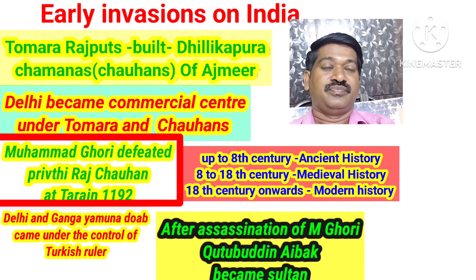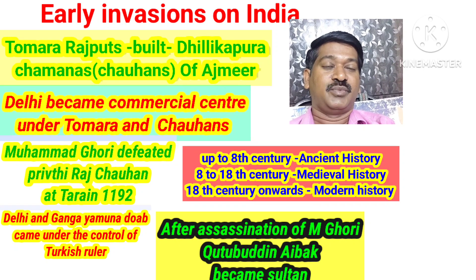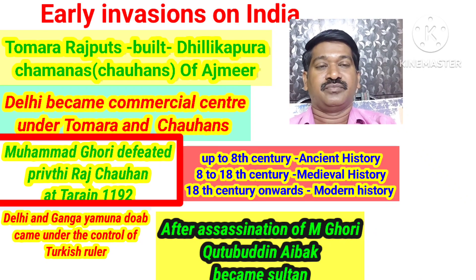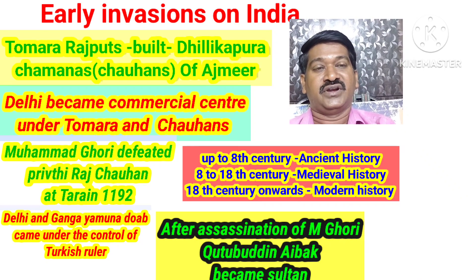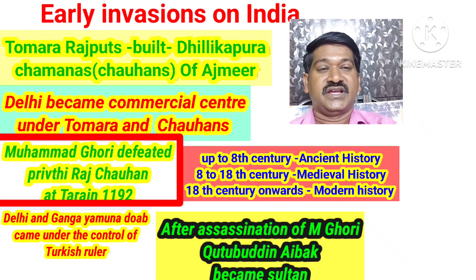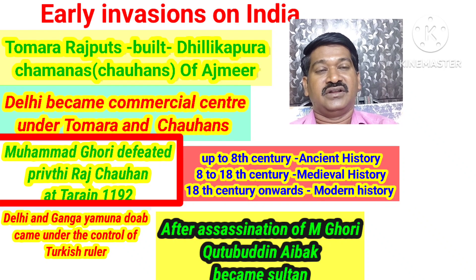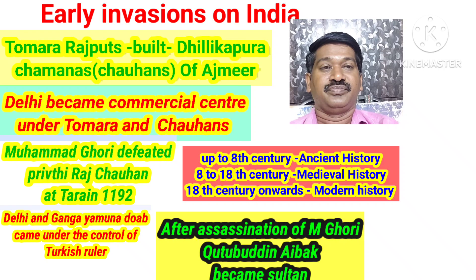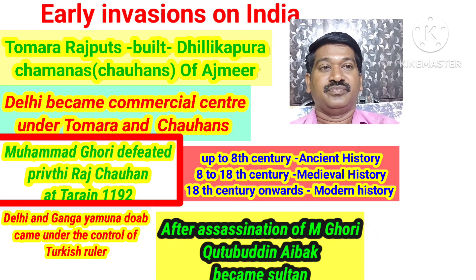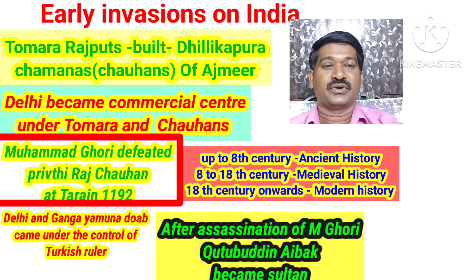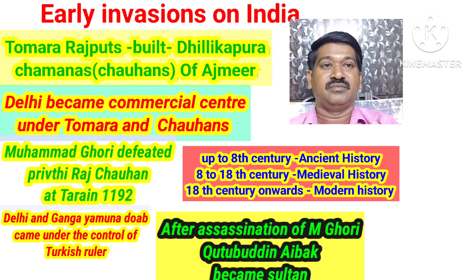During the Chahamanas rule, Muhammad Ghori invaded India. Muhammad Ghori invaded against Prithviraj Chauhan in 1191 AD — this was the 1st Battle of Tarain. In the 1st Battle of Tarain, Prithviraj Chauhan defeated Muhammad Ghori. But once again Muhammad Ghori invaded India in 1192 AD. In the 2nd Battle of Tarain, Muhammad Ghori defeated Prithviraj Chauhan, and Delhi came under the control of Muhammad Ghori.